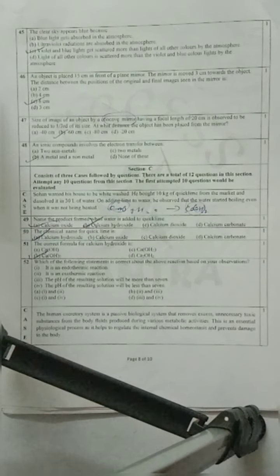Question 47: Size of image of an object by a concave mirror having a focal length of 20 centimeter is observed to be reduced to one-third of its size. At what distance the object has been placed from the mirror? Option B - minus 60 centimeter. Obviously for object it will be negative.